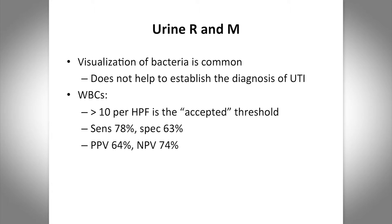For an RNM — a specimen sent to the lab and looked at under a microscope by a technologist — visualization of bacteria is common. Seeing a report that says 'bacteria, many' does not indicate a urinary tract infection. White blood cells can be counted per high-power field, and greater than 10 white cells per high-power field is the accepted threshold for abnormal. For bacteria, sensitivity and specificity are only 78 and 63 percent. All of this means that none of these tests is very helpful unless they are all completely negative.